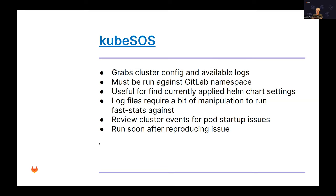The cluster event logs in Kube SOS are also really useful. With Kubernetes, issues often aren't with how GitLab is configured but with the cluster itself — it may be running out of resources or evicting pods because memory is too low. You can go back to the customer and say they need to increase memory or reduce the number of pods. As with GitLab SOS, it's best to run Kube SOS as soon as possible after reproducing the problem because Kubernetes logs can rotate quickly.